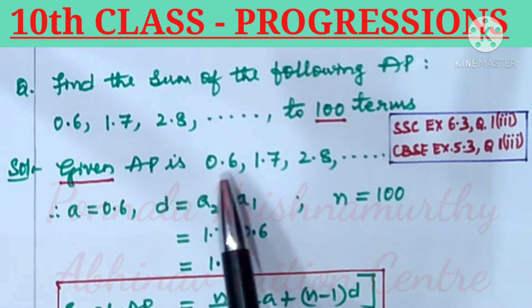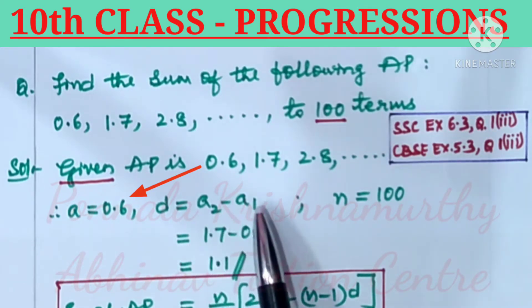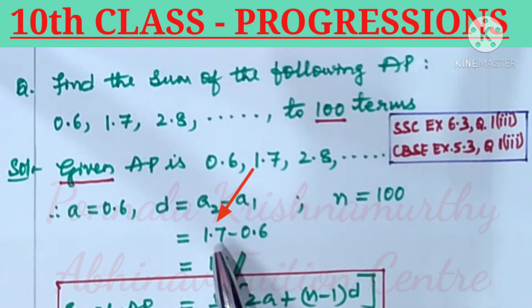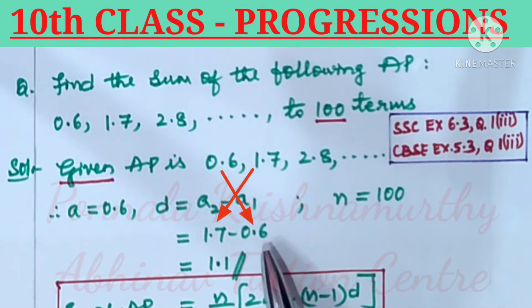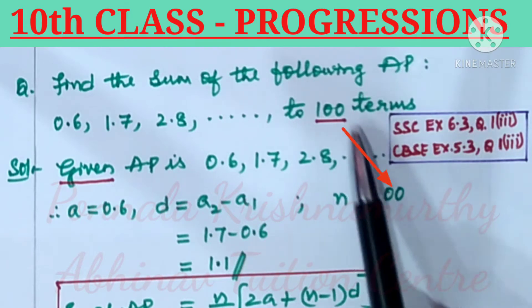Here the first term a is equal to 0.6, and the common difference d equals a₂ minus a₁, that is equal to 1.7 minus 0.6. This becomes 1.1. Here n is equal to 100.